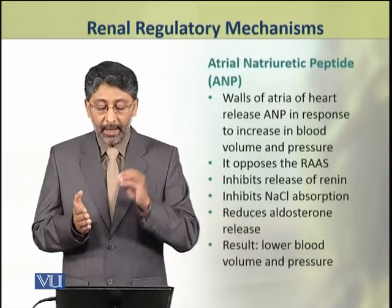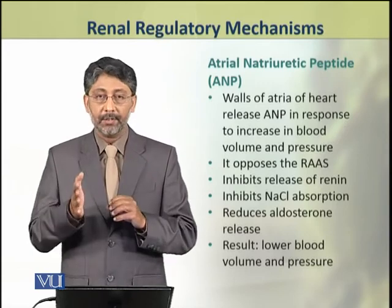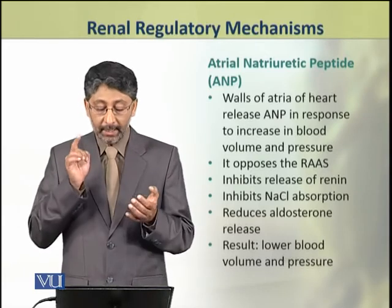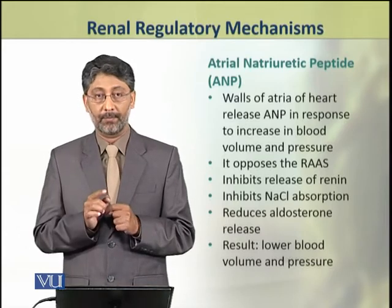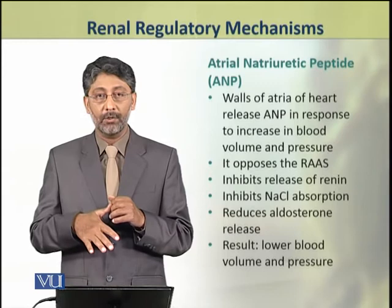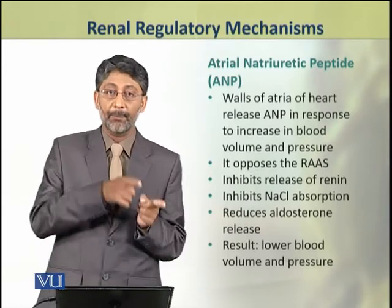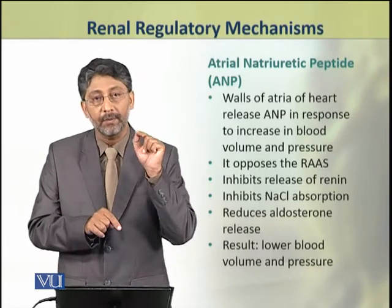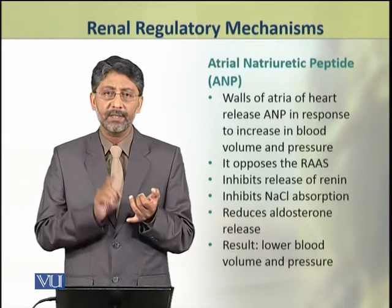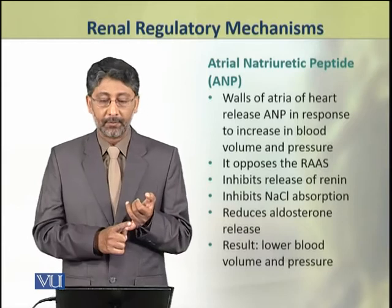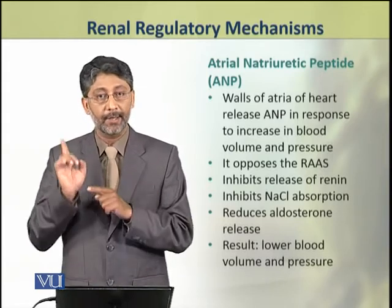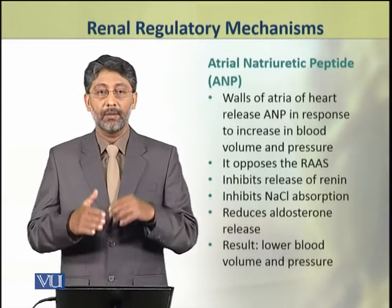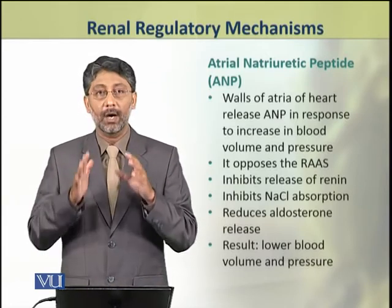The atrial natriuretic peptide is released from the walls of the atria of the heart in response to increased blood volume and pressure. Its functions are opposite to that of the RAS. It inhibits the release of renin, inhibits sodium ion and chloride ion reabsorption, and reduces aldosterone release. As a result, blood volume and pressure are lowered.